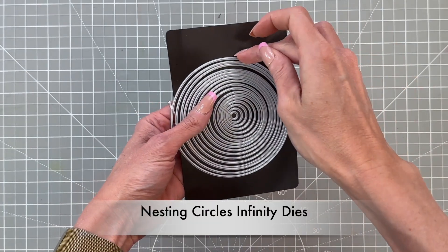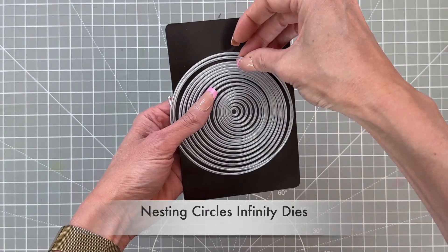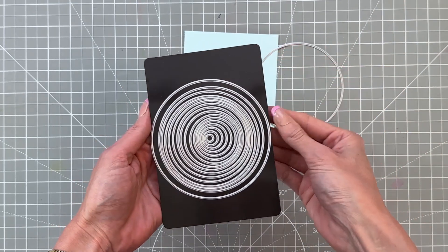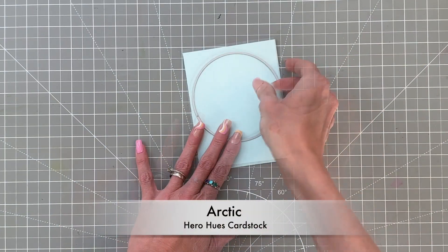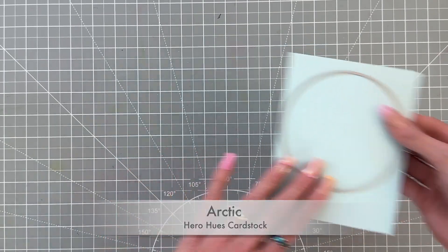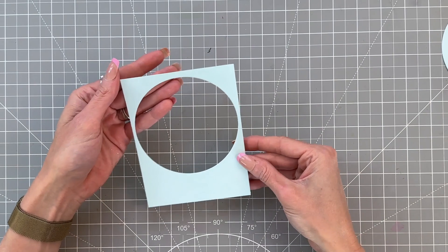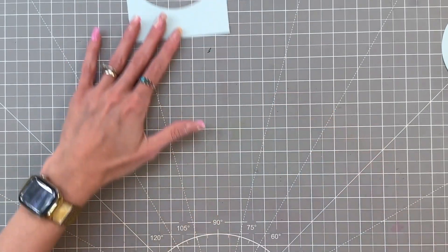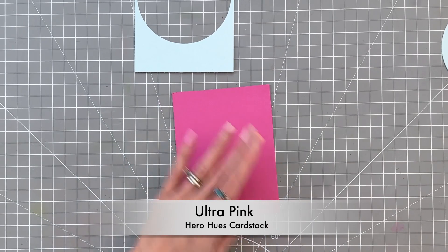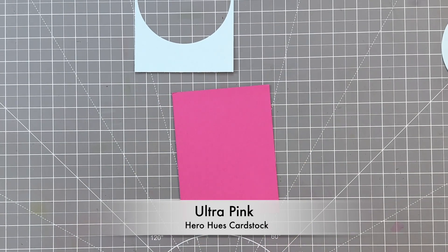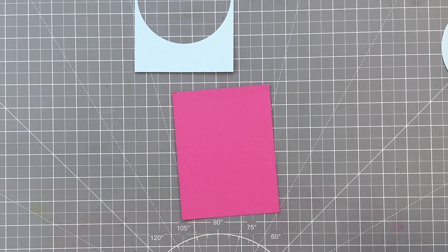Now I'm going to move on to the nesting circles infinity dies. I'm going to grab the second largest die from this set and die cut an A2 panel of arctic cardstock with that die. We're going to keep the panel and put the circle aside—we'll use that later to die cut another circle from, but mainly we want that windowed panel.